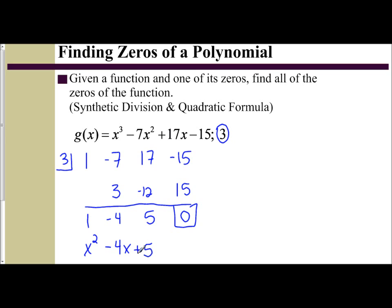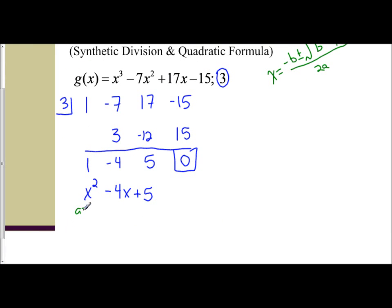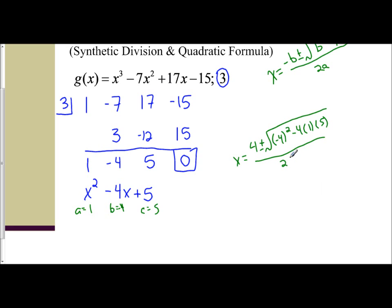This is not factorable, so we're going to apply the quadratic formula again: x equals negative b plus or minus the square root of b squared minus 4ac, all over 2a. From x² - 4x + 5, my a is 1, b is negative 4, and c is 5. So x equals the negative of negative 4, which is positive 4, plus or minus the square root of negative 4 squared minus 4 times 1 times 5, all over 2 times 1.